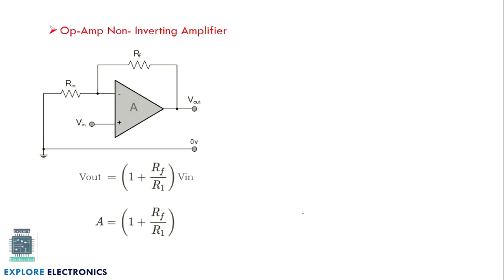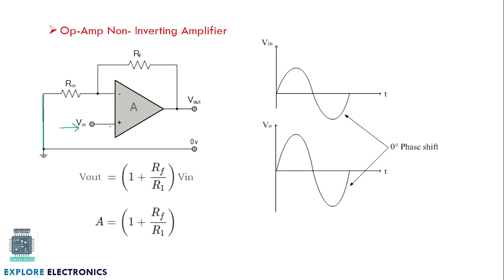In the non-inverting amplifier, the input is applied from the non-inverting terminal and the inverting terminal is grounded. When we apply input to the non-inverting terminal, the output does not take a phase shift — it amplifies with no phase inversion. The output formula is V_out = (1 + R_f / R_1) × V_in. The gain is positive, and since it is a non-inverting amplifier it amplifies with a gain of 1 + R_f / R_1.